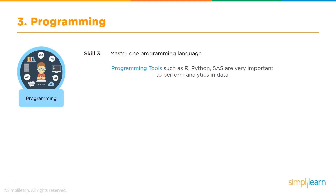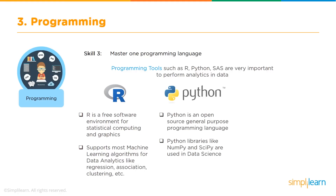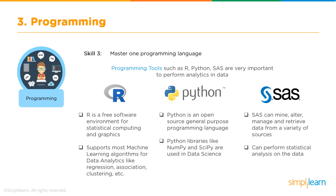Skill number three: programming. Mastering one programming language is key. Programming tools such as R, Python, and SAS are very important to perform analytics on data. R is a free software environment for statistical computing and graphics, supporting most machine learning algorithms for data analytics like regression, association, and clustering. Python is an open-source, general-purpose programming language, and libraries such as NumPy and SciPy are used in data science. SAS can mine, alter, manage, and retrieve data from a variety of sources, and can also perform statistical analysis on the data.